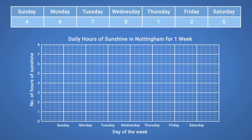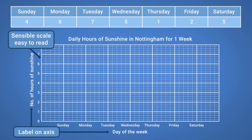To draw a line graph, we first need to draw a sensible scale that's easy to read, and then add labels to our x-axis and y-axis. We also need to add a suitable title.